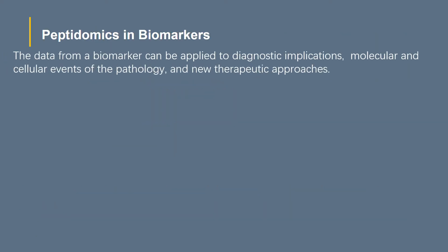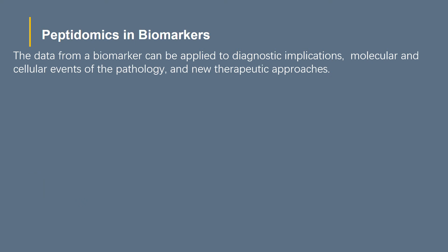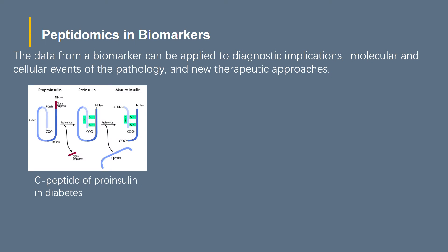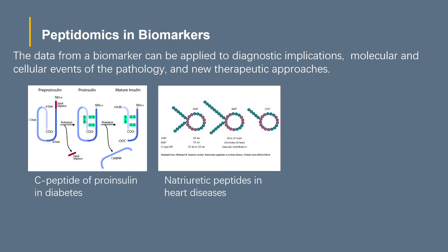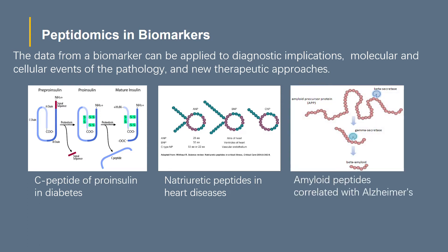Peptidomics can be used for biomarker discovery. The data from a biomarker can be applied to diagnostic implications, molecular and cellular events of the pathology, and new therapeutic approaches. Many peptidomics studies are searching for molecular analytes which correlate with disease states, including C-peptide of proinsulin in diabetes, natriuretic peptides in heart diseases, or amyloid peptides correlated with Alzheimer's. Peptide biomarkers have to fulfill two tasks, including qualitative analysis and quantitative analysis, which will allow for the selection of those peptides that are valuable for the desired drug development process.